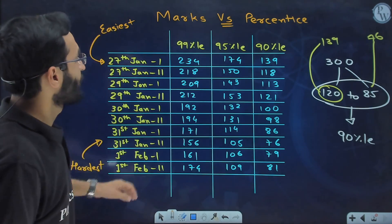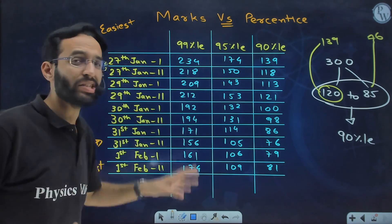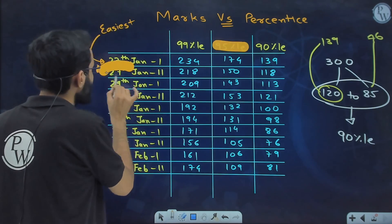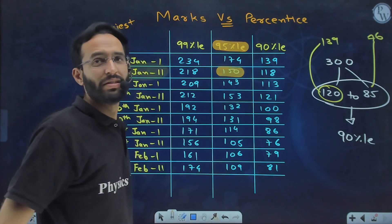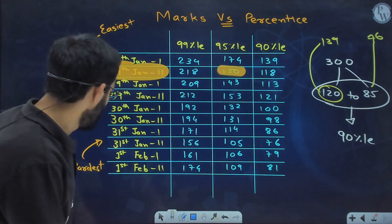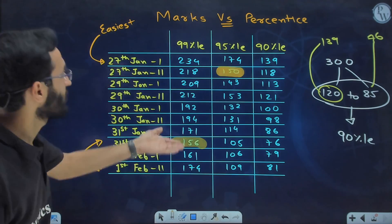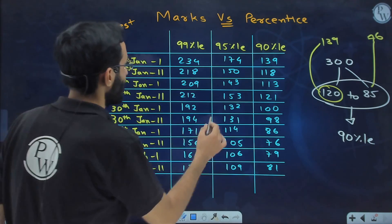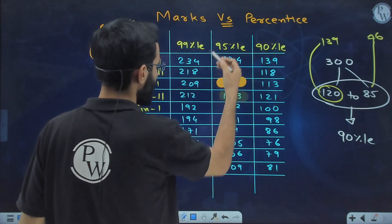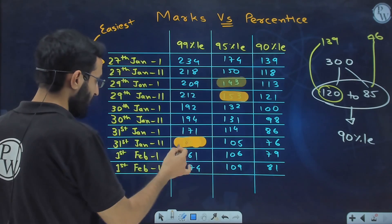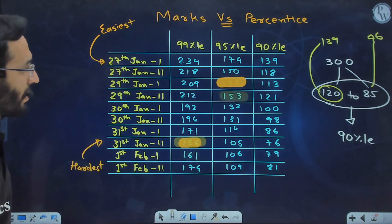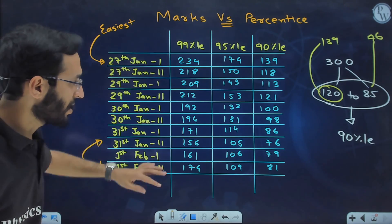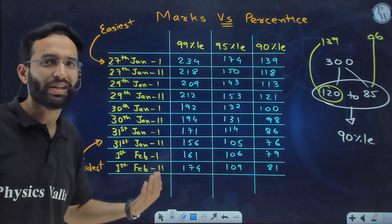Going into more detail: for 95 percentile in 27th January Shift 2, you needed 150 marks, but in the hardest shift, 150 marks gives 99 percentile. Also, at 143 marks you are getting 95 percentile in one shift, and at simply 150 you are getting 99 percentile in another. This is why we cannot predict percentile based on marks alone — it completely depends on the difficulty of your shift.